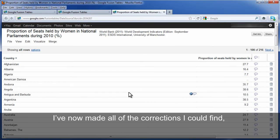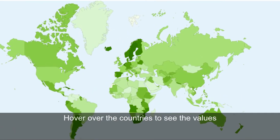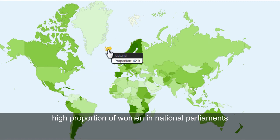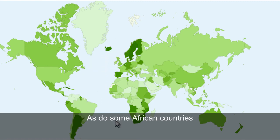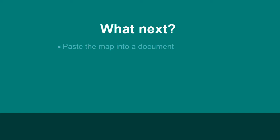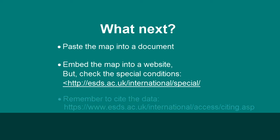I've now made all the corrections I could find, so I'll open up the map again. Hover over the countries to see the values. The Scandinavian countries, for example, have a high proportion of women in national parliaments, as do some African countries. Rwanda, for example, has the highest proportion at 56.3%. You could use your keyboard's Print Screen key and paste the map into a document, or embed the map into a website — but to do this you would need to make the data publicly available. Check the special conditions to see if this is possible, and also remember to cite the data. Thank you for watching this screencast.